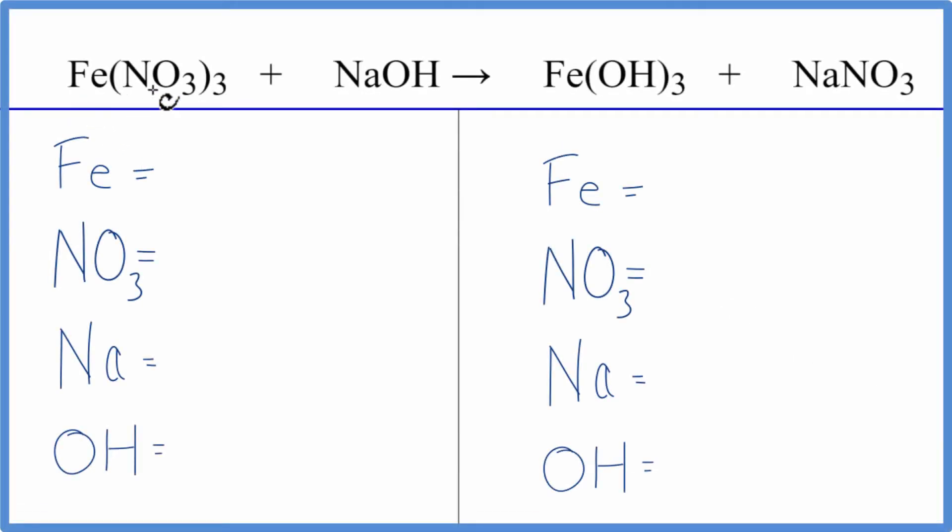To balance this equation, Fe(NO3)3 plus NaOH, let's count the atoms up on each side. This is a double displacement reaction, so we're going to use a bit of a trick to make it easier.